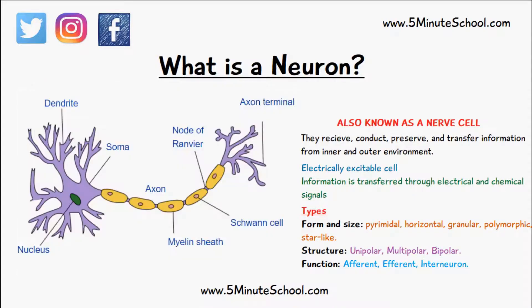When classifying neurons based on their function, they can either be afferent — which are usually sensory neurons heading upwards towards the brain or the spinal cord.